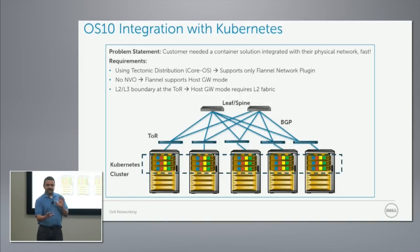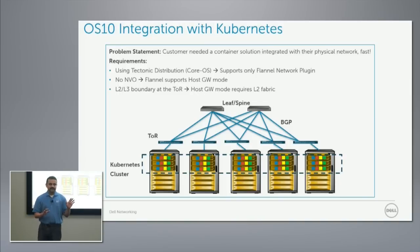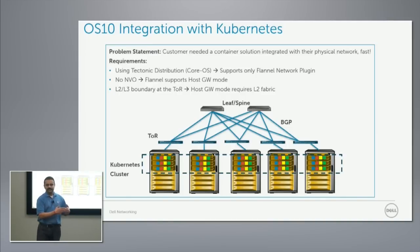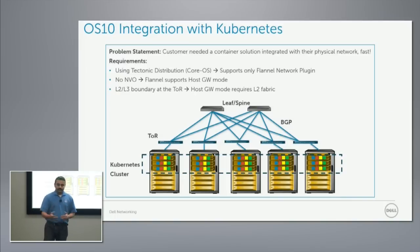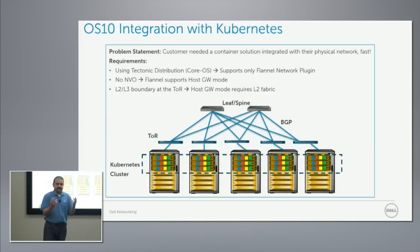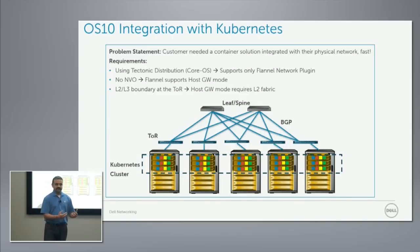There is some requirement from the underlay. For example, if you build an L3 network, you need network virtualization because that's how you forward the packet — you encapsulate it, take it to the destination host, strip the encap, and forward the packet. If you don't have network virtualization, you have to build an L2 fabric. Some customers didn't want network virtualization because of performance issues, so they needed an L2 fabric.